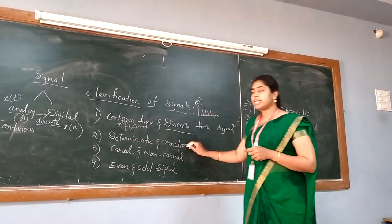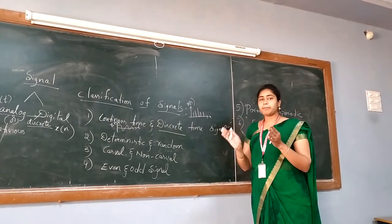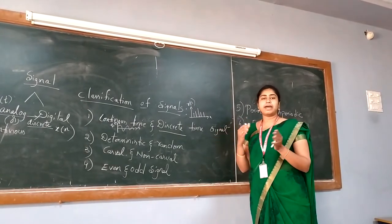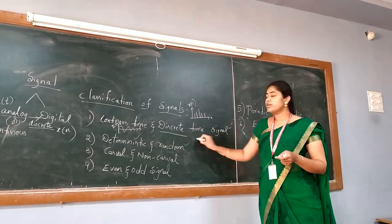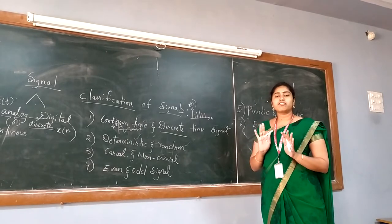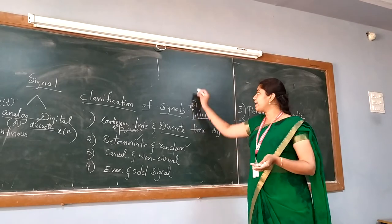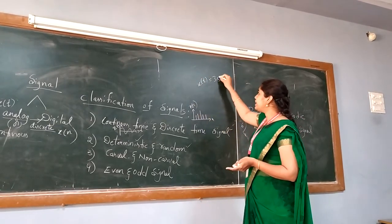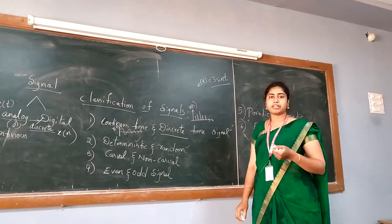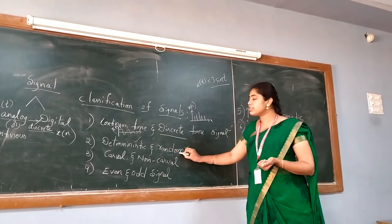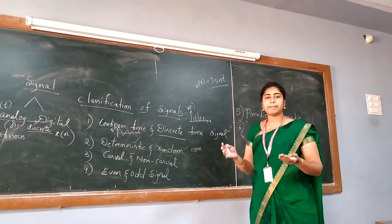Coming to deterministic and random signal. Any signal, if you are able to determine it mathematically or by using a mathematical equation, it is called a deterministic signal. Any signal if you are not able to represent it mathematically, it is called a random signal. Example of deterministic: X of T is equal to 3 sine T — you can represent it in terms of a trigonometric equation. Random signal example: noise. A noise signal cannot be determined mathematically.